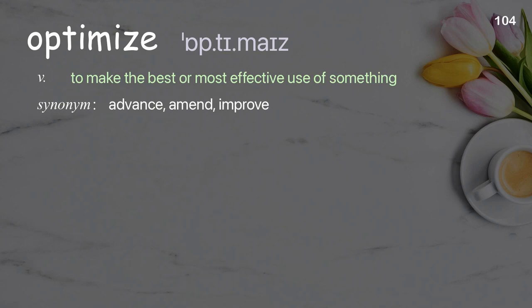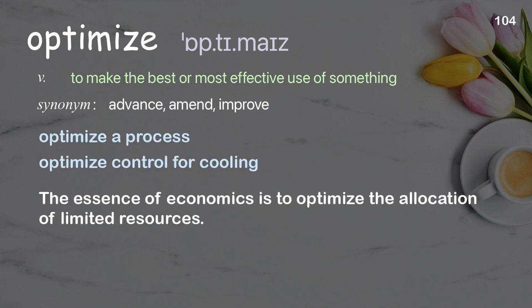Optimize: To make the best or most effective use of something. Examples: Optimize a process, optimize control for cooling. The essence of economics is to optimize the allocation of limited resources.